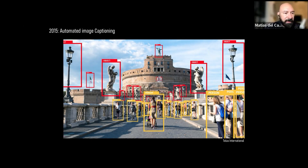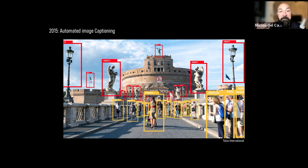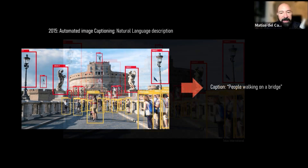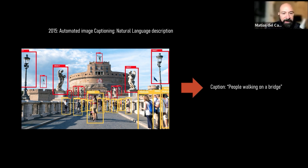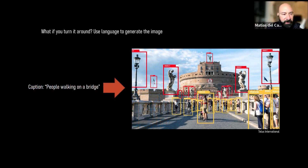It basically started with something called automated image captioning in 2015, when somebody figured out that if we have a ton of annotated images — ImageNet has millions of annotated images by now — we can have a neural network understand what the scene is. Not just details like 'there's a person, a lamp, a statue,' but what the whole thing is. In this case the automatic caption was 'people walking on a bridge.' But what happens if we turn the whole thing around?